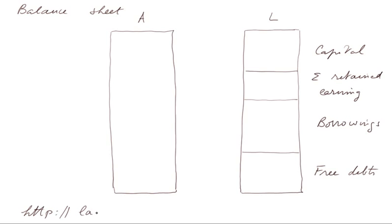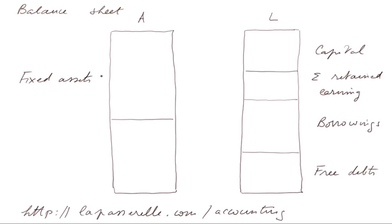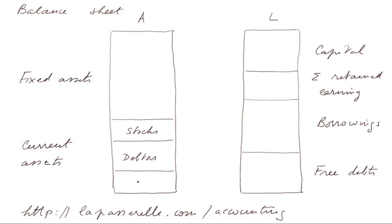The course in General Accounting is at http://lapasserelle.com/accounting. On the asset side, we have two big parts: fixed assets and current assets. In the current assets, we have stocks (also called inventories), client paper (also called debtors), and an account for something as close as possible to money — cash and bank, sometimes lumped together, sometimes distinguished. The AOU from Carrefour goes into the debtors account.